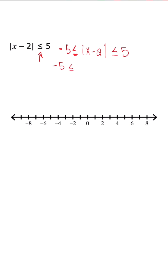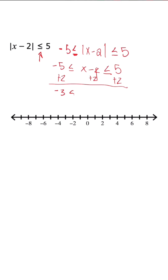Once I drop my brackets, this is what my expression should look like, and we're trying to get x in the middle by itself. So we're going to add 2 on both sides. Now once we simplify, this is going to be the inequality that represents the answer: x is greater than or equal to negative 3 and less than or equal to 7.